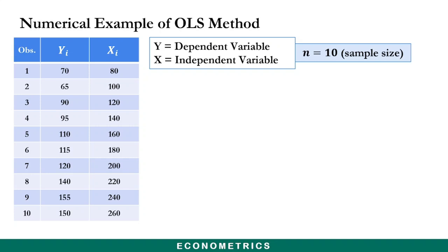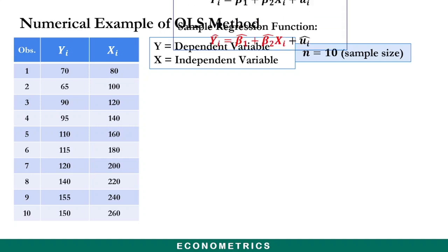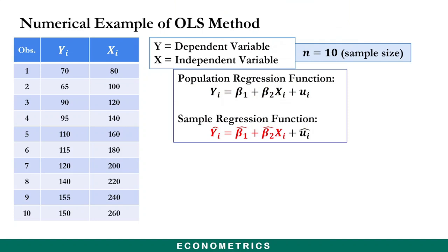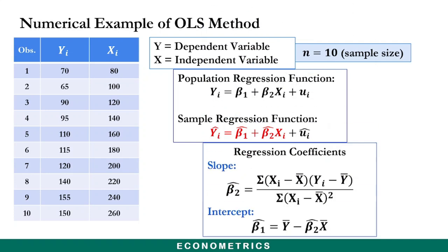You need to keep in mind the stochastic specification of the population regression function and that of the sample regression function, which we used through the method of ordinary least squares to derive the regression coefficients — the slope and that of the intercept respectively.